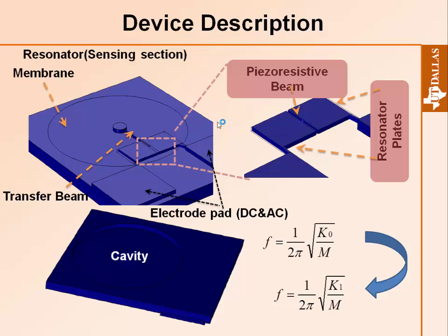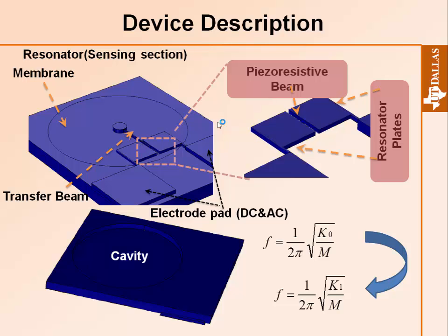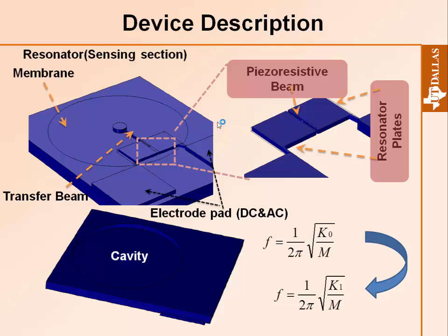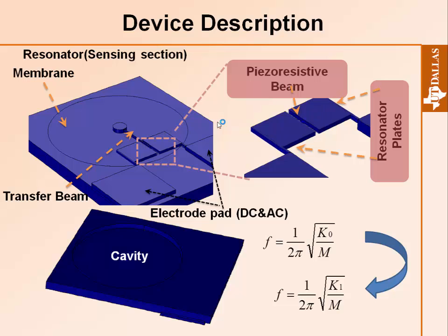The parameter k is the stiffness of the beam and m is the mass of the plate. By applying both AC and DC to the electrode pad, and adjusting the AC frequency to the natural resonance frequency of the system, it will start to resonate. We detect shear stress by changing the stiffness to produce a frequency shift. The membrane deflects up or down, and the transfer beam induces a force that changes the stiffness of the beam.